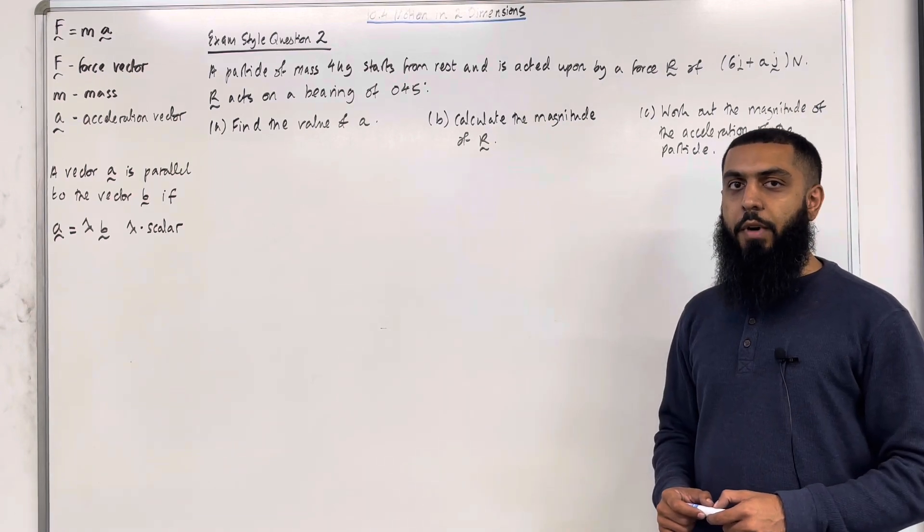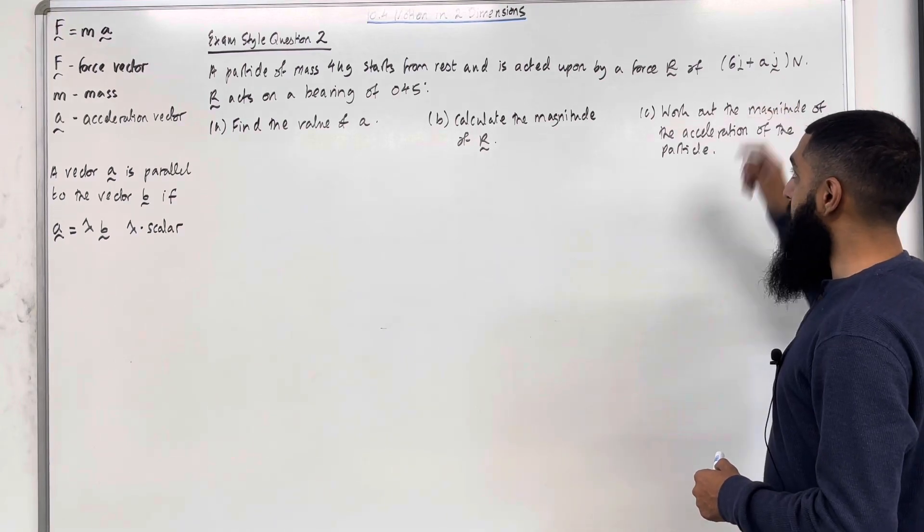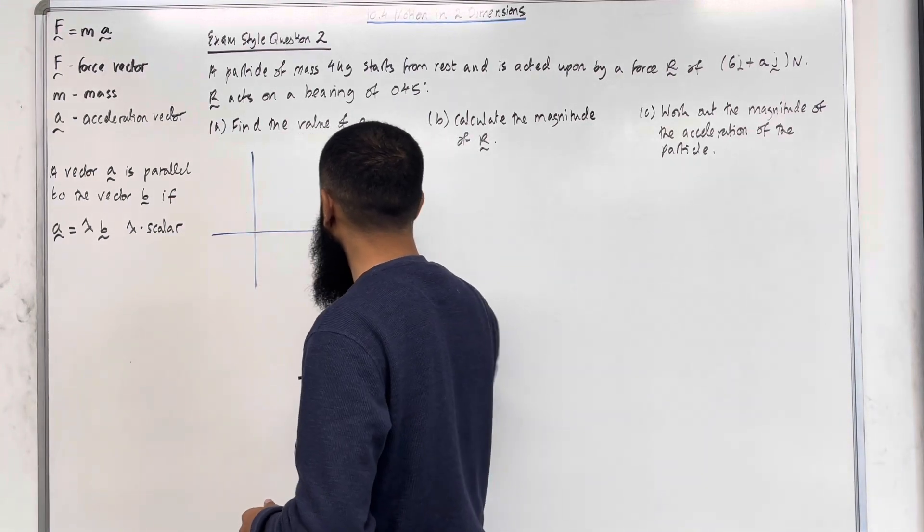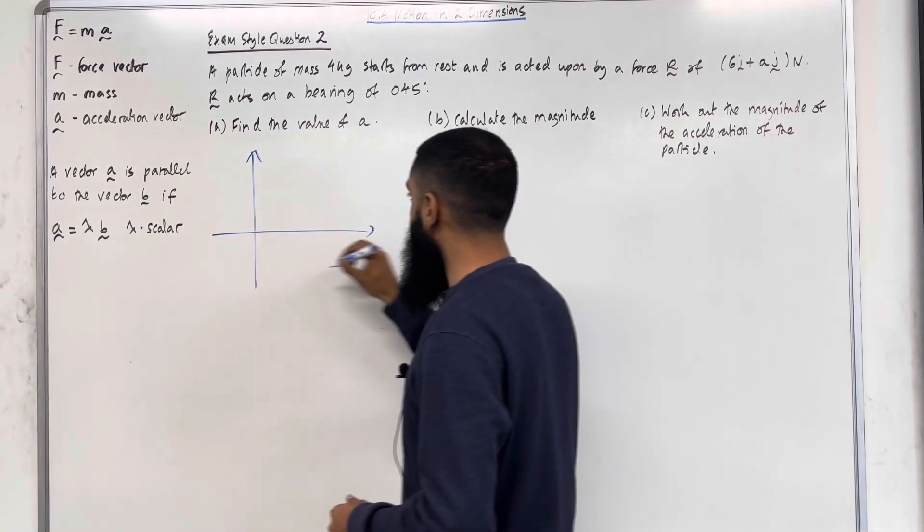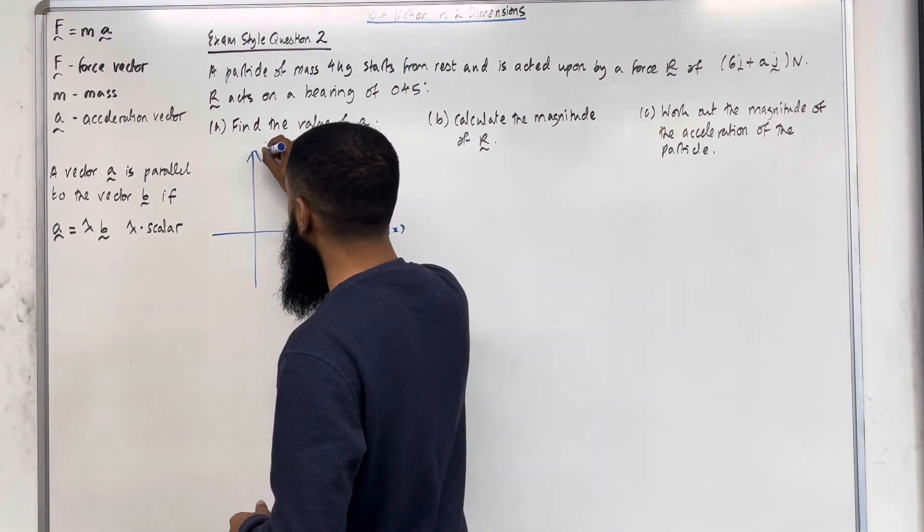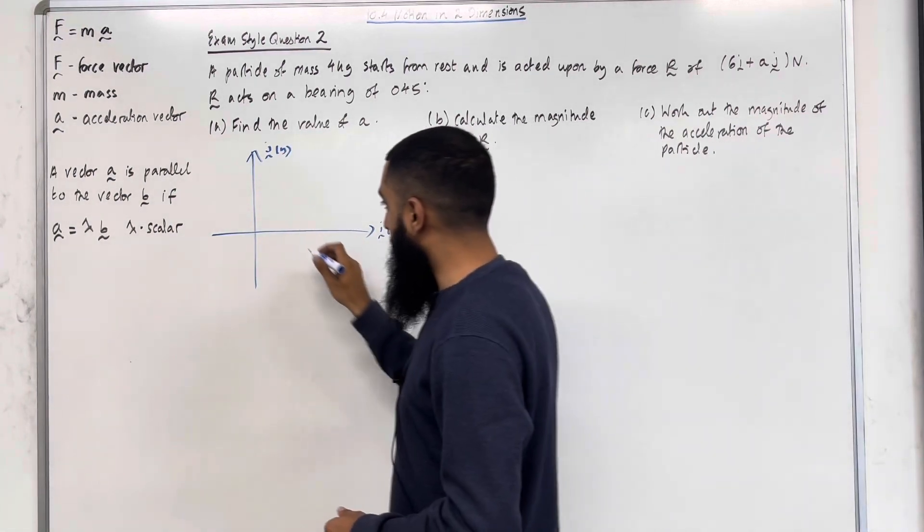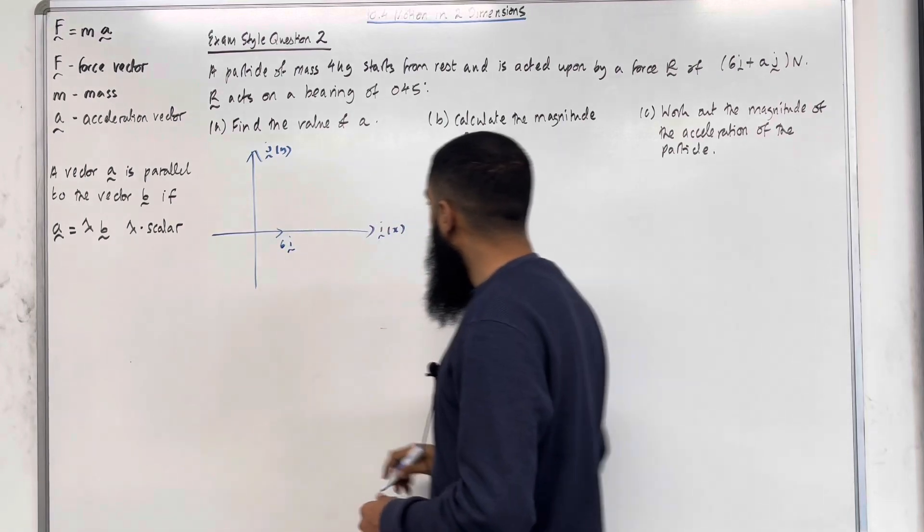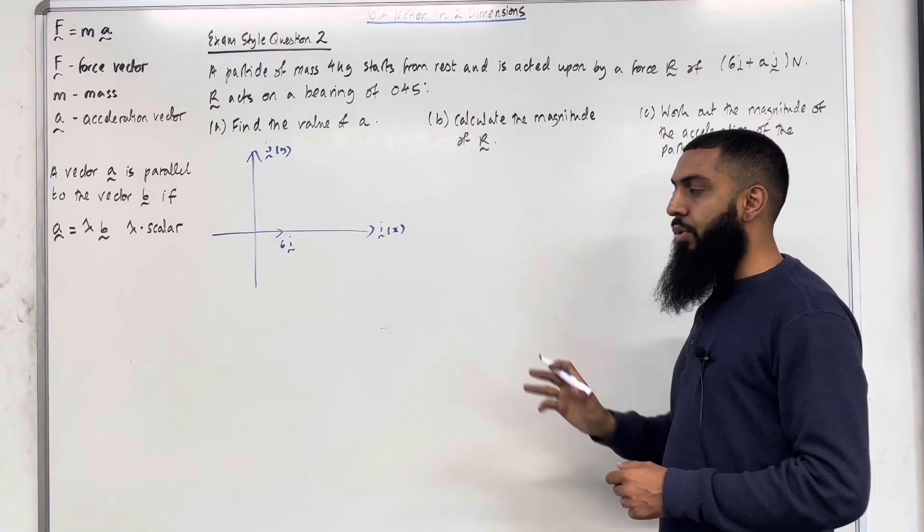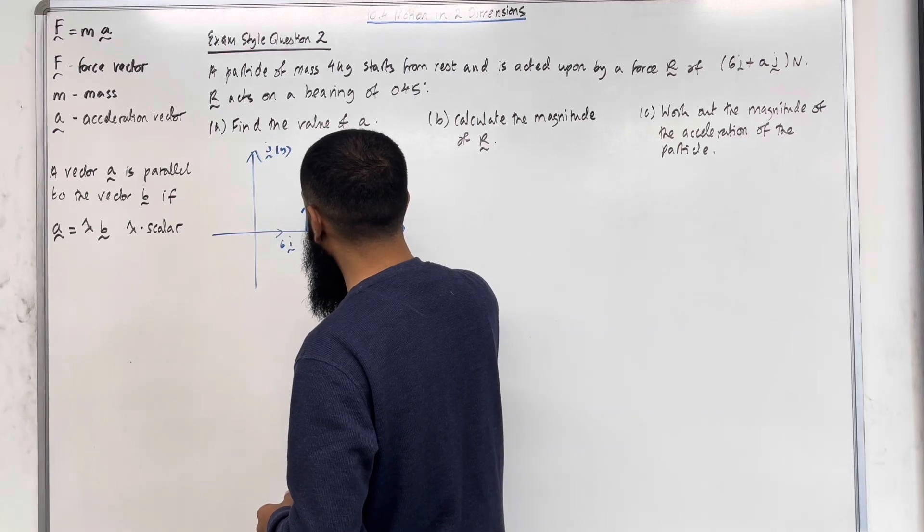Let's have a look at the solution to part A. I'm going to start by drawing the force R, which is 6i plus aj newtons. Here is my coordinate grid. The horizontal axis represents i, which is x, and the vertical axis represents j, which is y. So I've got 6i, that's 6 units to the right. Then we've got plus aj. Now, a is a positive constant. So aj is a units going up.